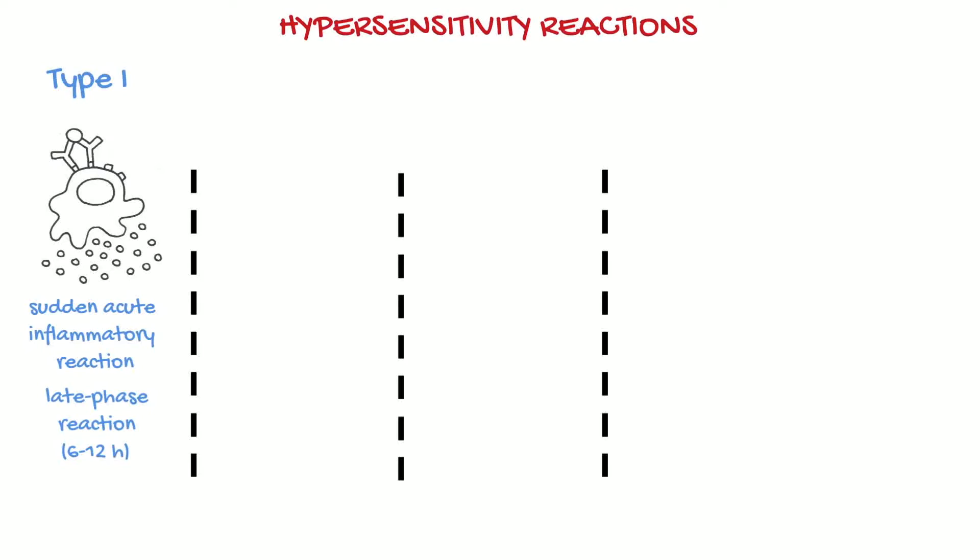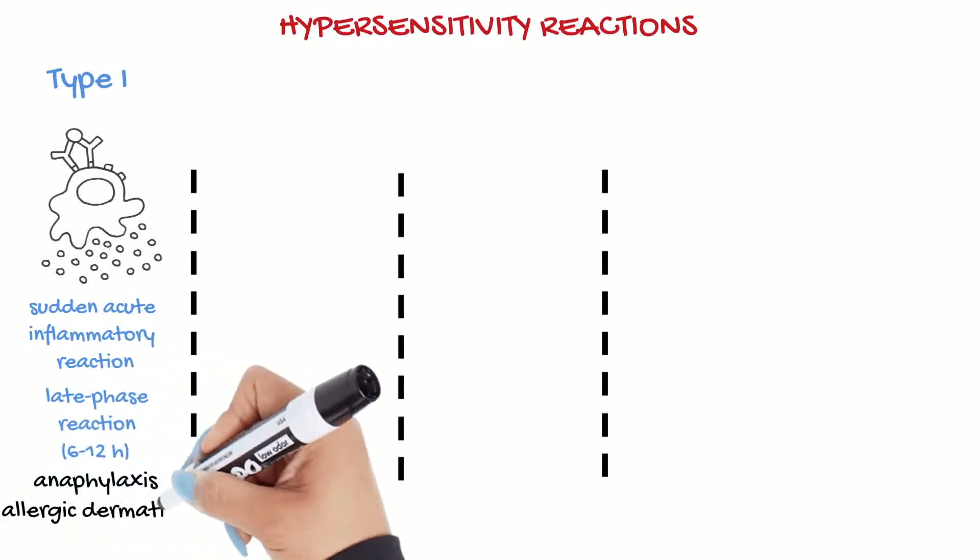The severity and location of the inflammation generated depend on the number and location of the inflammatory cells. Examples of this type of hypersensitivity are anaphylaxis, allergic dermatitis such as insect bite hypersensitivity, and food allergies, although these are uncommon in horses.